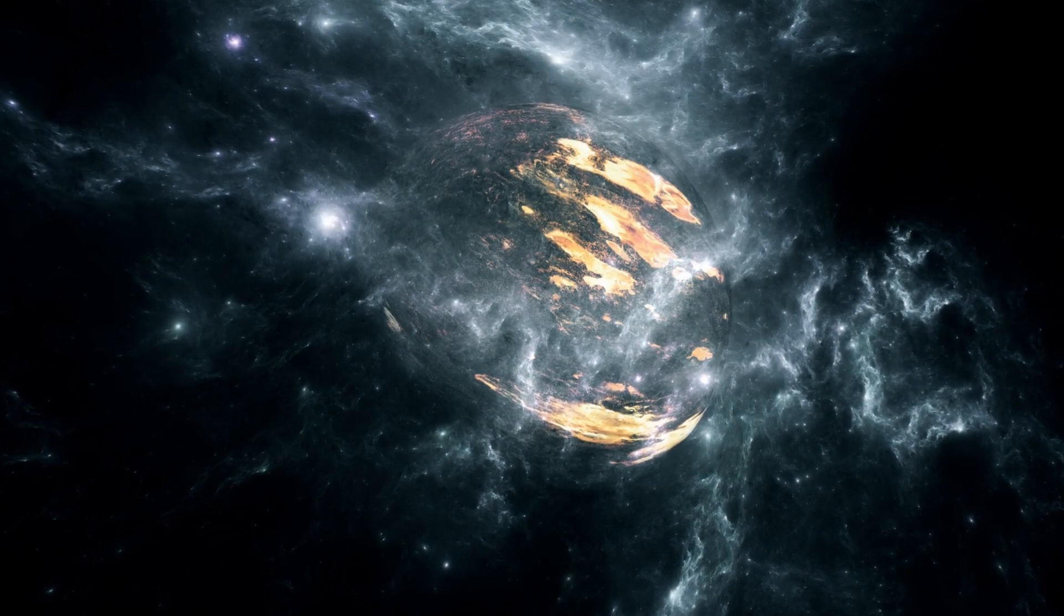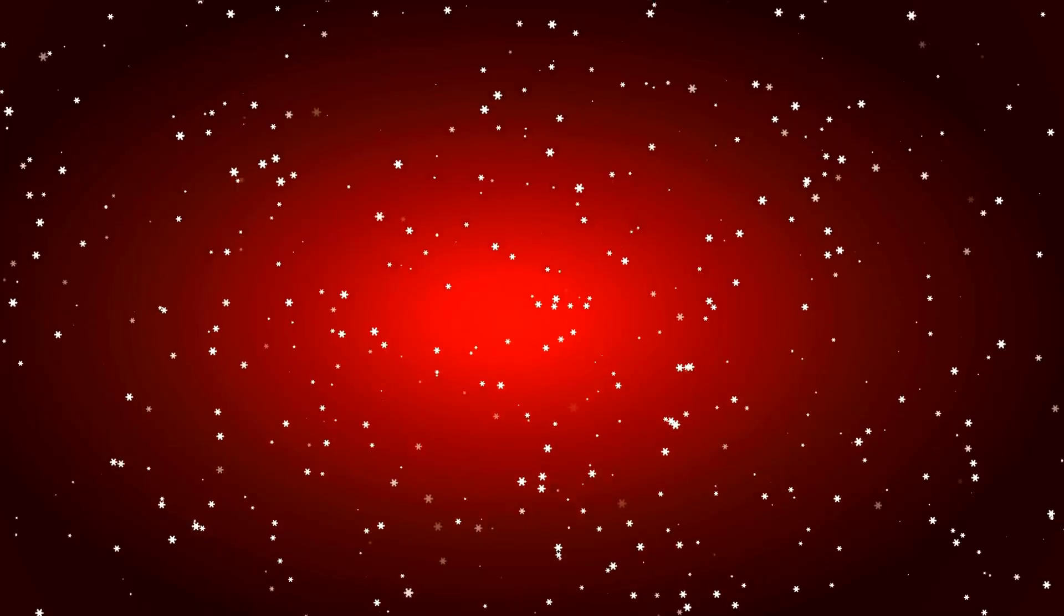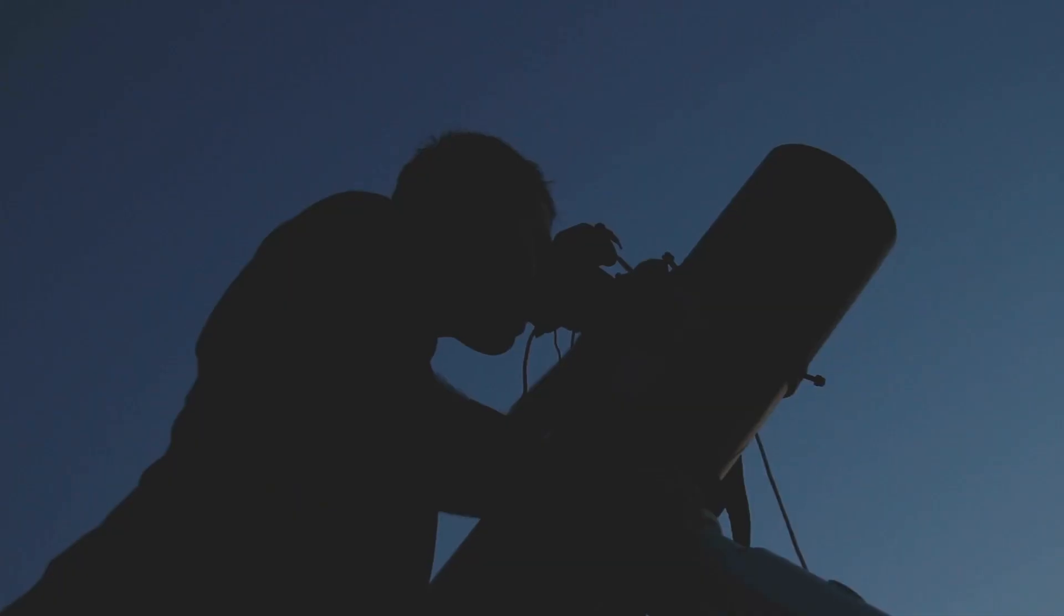The universe has a way of surprising us, and Betelgeuse is no exception. Between late 2019 and early 2020, something extraordinary happened. The star dimmed dramatically, so much that even casual stargazers noticed. Dubbed the Great Dimming, it sparked a global frenzy. Was Betelgeuse about to blow? Astronomers scrambled to their telescopes, hearts racing with the possibility of witnessing a supernova in our lifetime.